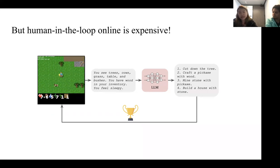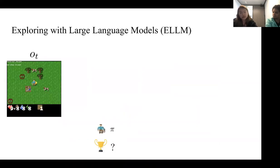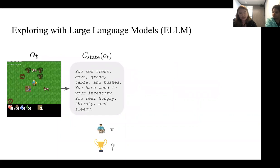Large language models, given their vast pre-training corpora, are able to capture common sense knowledge and world knowledge from human data. We hypothesize that these language models can similarly propose context-sensitive and common sense-sensitive goals as a person would. So we propose Exploring with Large Language Models (ELM). At a high level, the agent is in a partially observed POMDP setting. We convert the agent's observations — whether pixel space or state space — to language, so the language model can also observe what the agent is currently encountering.